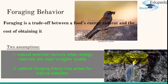The optimal foraging approach makes two assumptions. First, natural selection will only favor behavior that maximizes energy acquisition if increased energy reserves lead to increases in reproductive success. Second, optimal foraging theory has resulted from natural selection — and as we know, natural selection can lead to evolutionary change only when differences among individuals have a genetic basis, so it can be passed on to future generations.